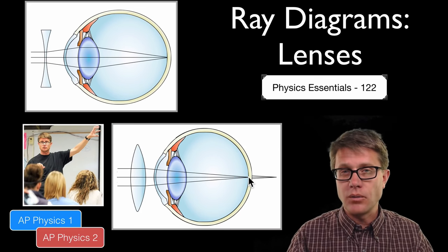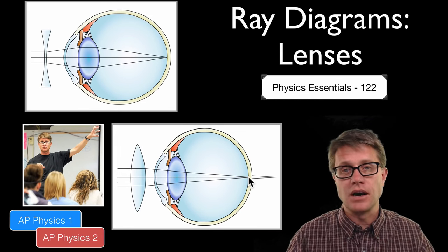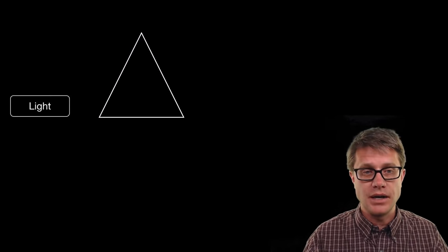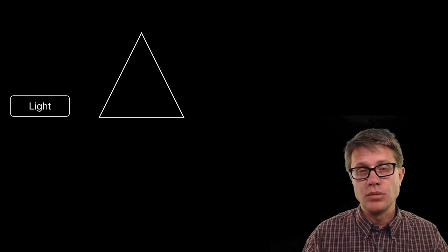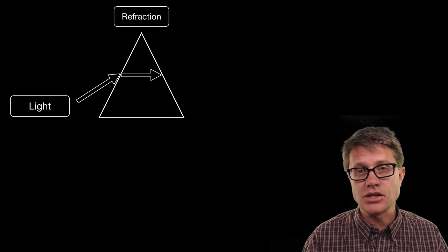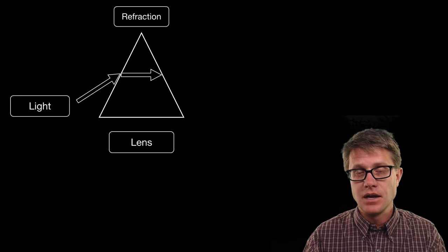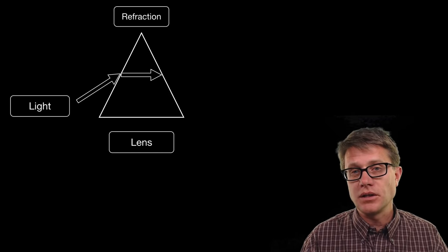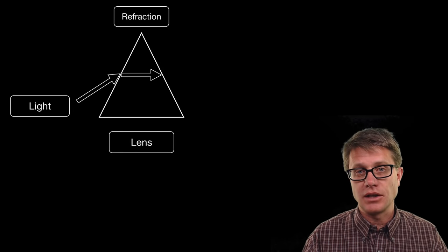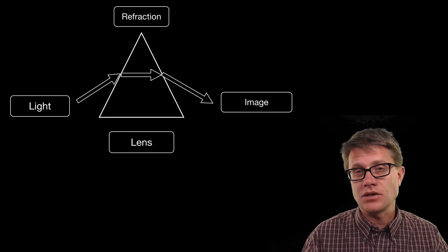When we look at where the image is created, we are looking at the focusing of those rays. Light as it moves from one medium to another can be bent — we call that refraction. What is doing the bending is going to be a lens. The ones we will deal with here are converging and diverging lenses made of glass, and as the light goes through, it creates an image.